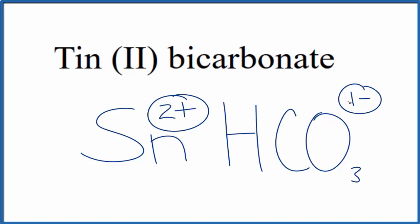Right now we have a 2+, and then the 1- on the whole hydrogen carbonate or bicarbonate ion. If we had 2 of these bicarbonate ions like this, 2 times 1-, that'd be 2-, that would balance out the 2+, give us a net charge of 0.